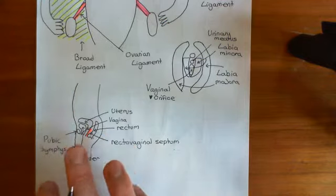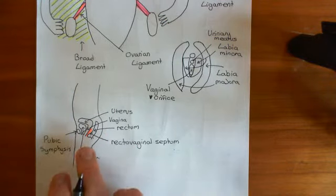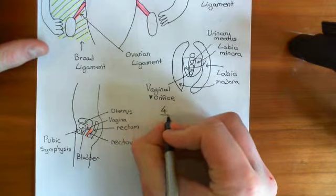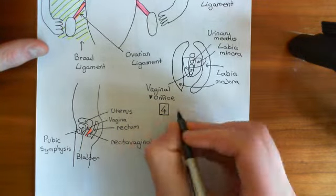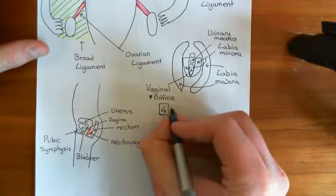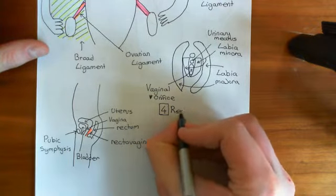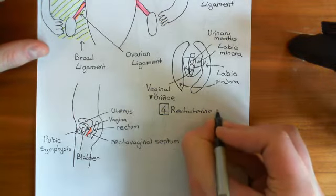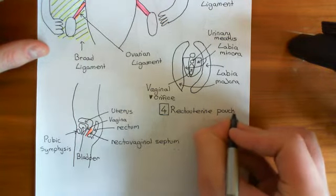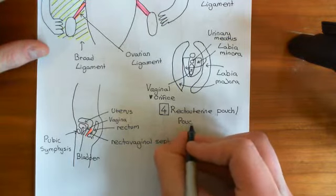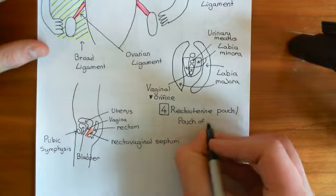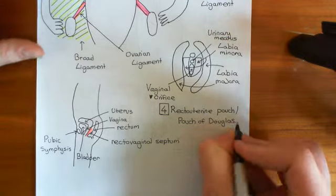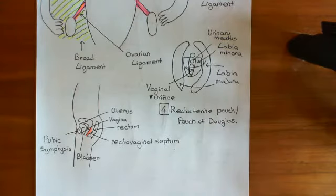Now we're going to discuss another thing we can understand from this picture. The fourth most common place for endometriosis to occur is what's known as the recto-uterine pouch, which is also called the pouch of Douglas. To explain the recto-uterine pouch, I need to make sure you're familiar with the concept of the peritoneal cavity.